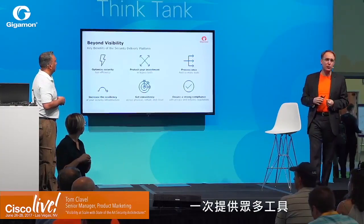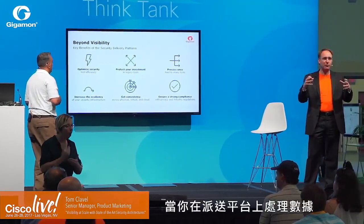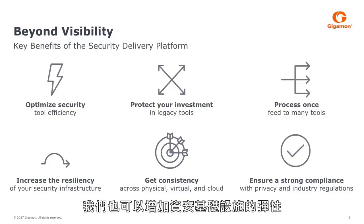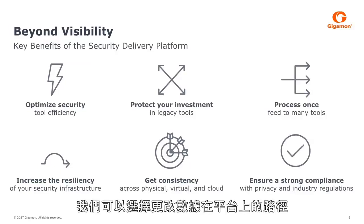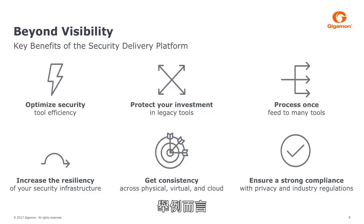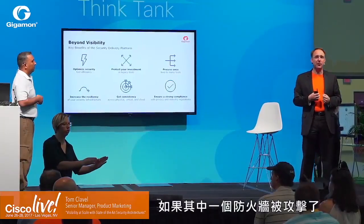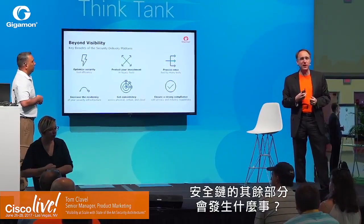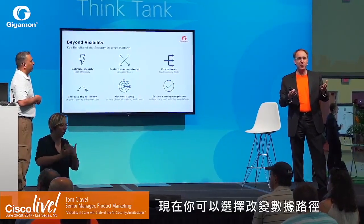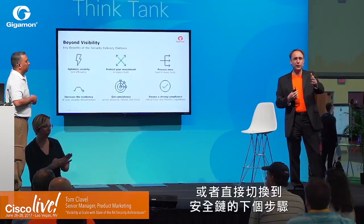Process once, feed to many tools. You process the data on the delivery platform — for instance, you decrypt the data with SSL decryption — and then feed it to multiple tools at the same time, or successively in the order you decide. We can also increase the resiliency of your security infrastructure. If one of your firewalls goes down, you have the option to change the path of the data to either a backup firewall or just switch to the next step in your security chain, keeping your whole security chain up.